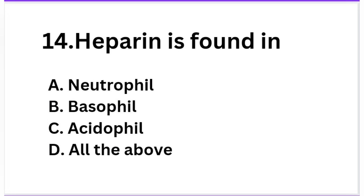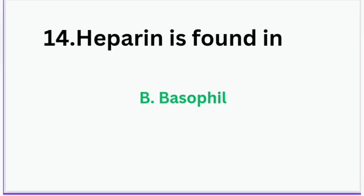Heparin is found in: Option A: Neutrophil, Option B: Basophil, Option C: Acidophil, Option D: All of the above. The correct answer is Option B — Basophil. Heparin is found in basophil.